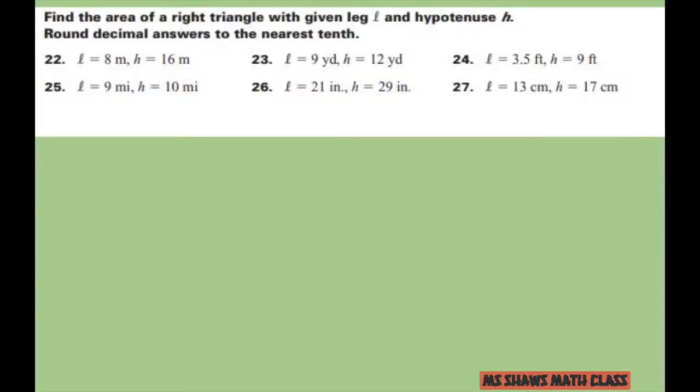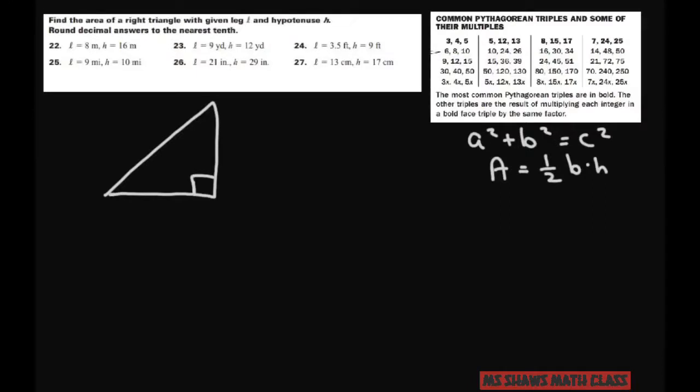Hi everyone. We're going to find the area of a right triangle given a leg L, a hypotenuse H, and we're going to round our decimal answers to the nearest tenth.